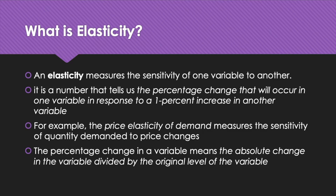The percentage change in a variable means the absolute change in the variable divided by the original level of the variable. For example, the percentage change in price means the absolute change in price divided by the original price. Suppose the price was Rs 5 initially and changed to Rs 10; the absolute change in price is Rs 5 (that is, Rs 10 minus Rs 5). The percentage change in price is this absolute change divided by the original price: 5 divided by 5, which equals 1.